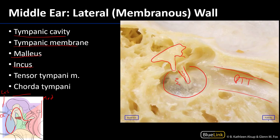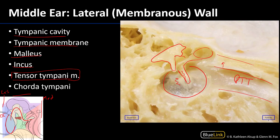Just superior to the pharyngotympanic tube — though somewhat obstructed — there's a muscle called the tensor tympani. The belly of that muscle is within a canal running parallel to the pharyngotympanic tube. The tendon for tensor tympani comes out of that passageway and inserts on the handle of the malleus. Having this tensor tympani is useful for helping to deaden loud sounds, so as to protect hearing.